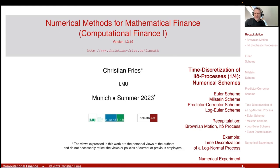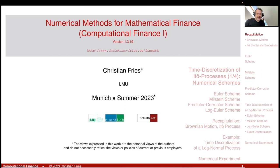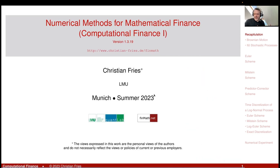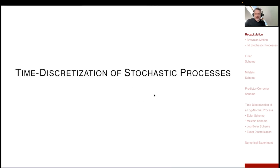Welcome to Numerical Methods. Today we will start a new chapter. We've seen random numbers and the Monte Carlo method, and last session we discussed how to use the Monte Carlo method for time-discrete stochastic processes. Today I'd like to start discussing the time discretization of time-continuous stochastic processes. We have a general model in continuous time, and once we find a way to discretize it, we can apply all the methods we've studied so far.